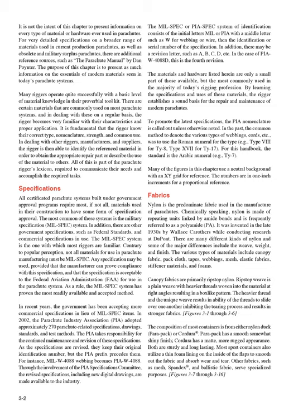In 2002, the Parachute Industry Association (PIA) adopted approximately 270 parachute-related specifications, drawings, standards, and test methods. The PIA takes responsibility for the continued maintenance and revision of these specifications. As the specifications are revised, they keep their original identification number, but the PIA prefix precedes them. For instance, MIL-W-4088 webbing becomes PIA-W-4088.